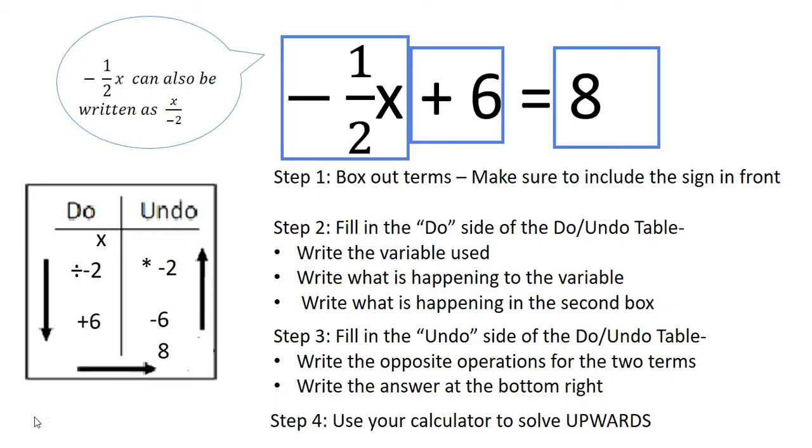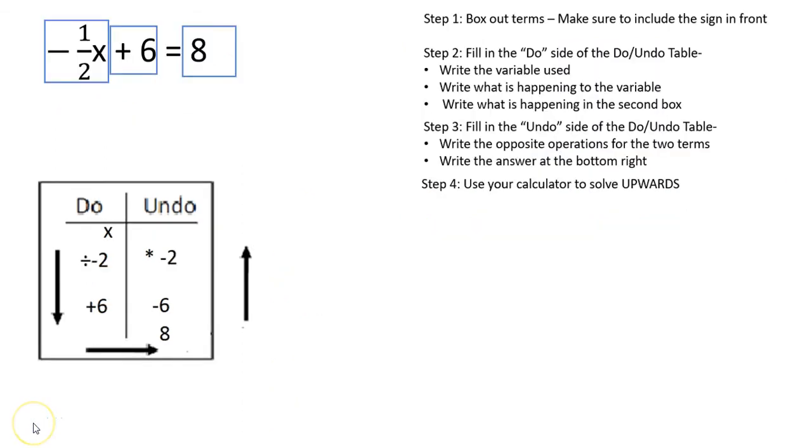In step 4, we will calculate upward just as before. 8 minus 6 is 2. Making sure we press equals after this step of the operation, otherwise we can get the wrong answer. We continue upwards and multiply by negative 2, and this gives us the final answer of negative 4 for our variable.